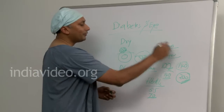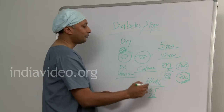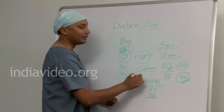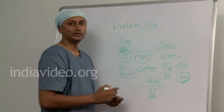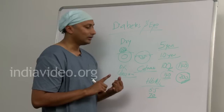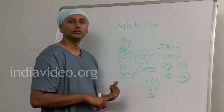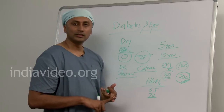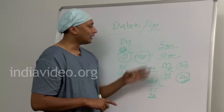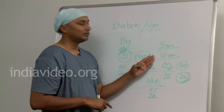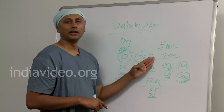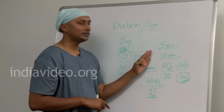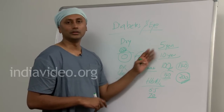In spite of all this, a person need not necessarily develop any of these complications if he diets well, controls his blood sugar well, exercises regularly, and also comes for an eye examination or sees an eye surgeon every two years.